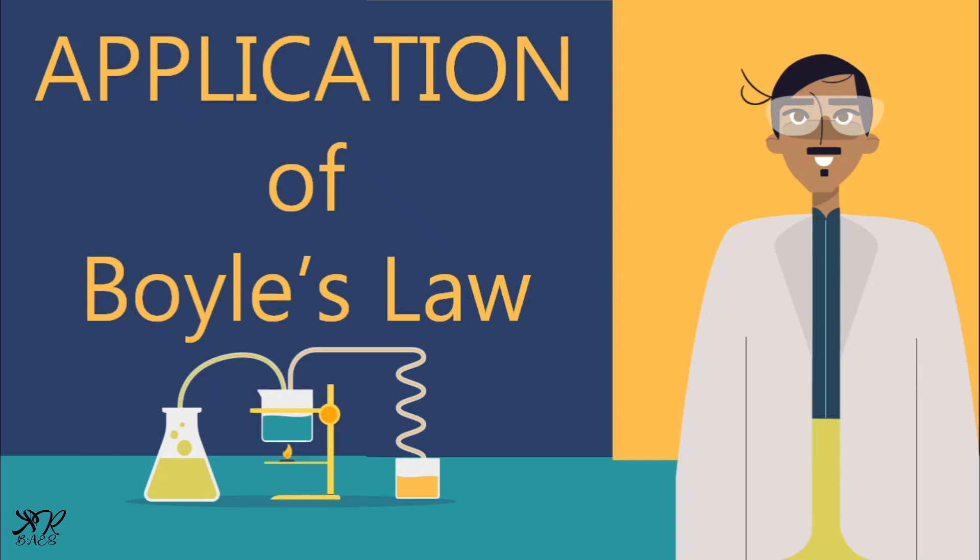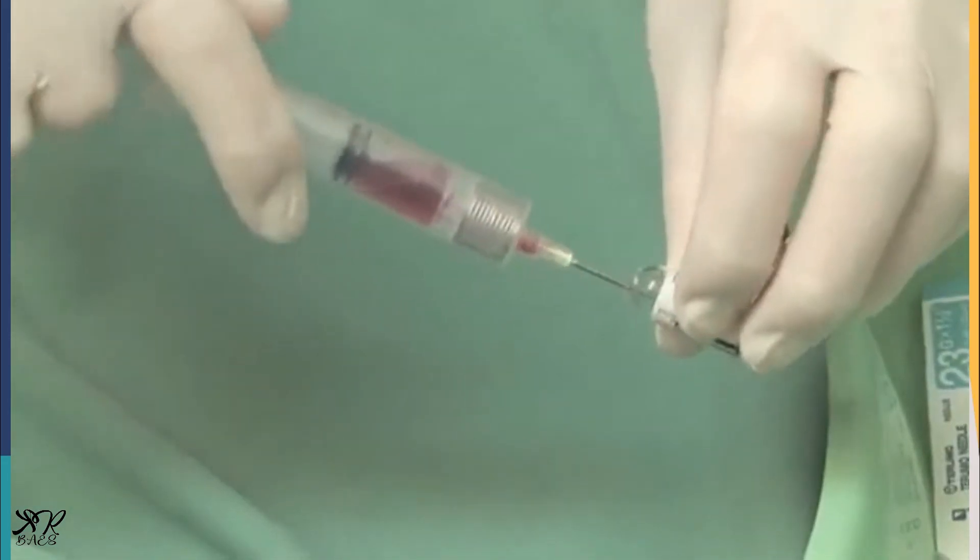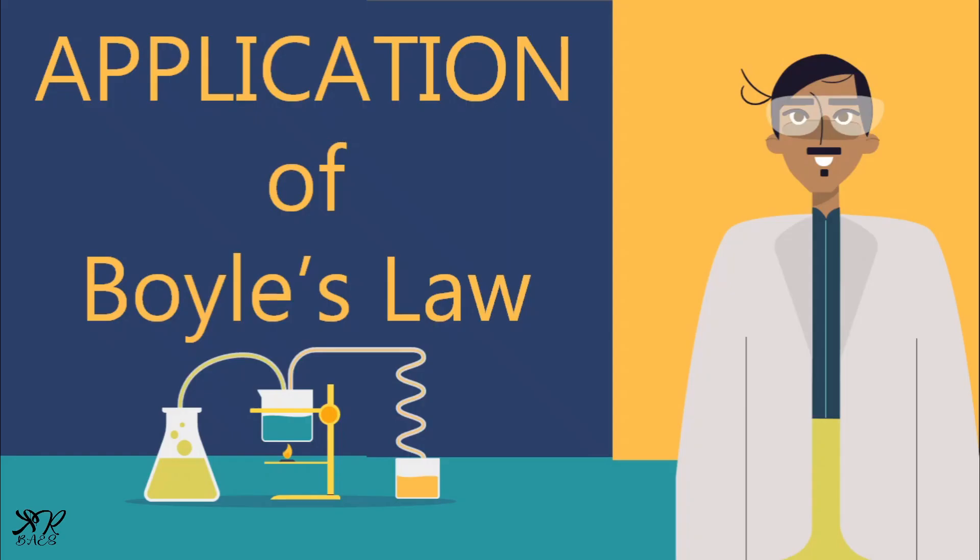Syringe is used in drawing blood samples or giving injections. If the plunger of the syringe is pulled back, the volume of the syringe is increased and the pressure inside is decreased. To balance the effect of low pressure, air or blood is sucked in through the needle. This equalizes the pressure inside and outside the syringe.